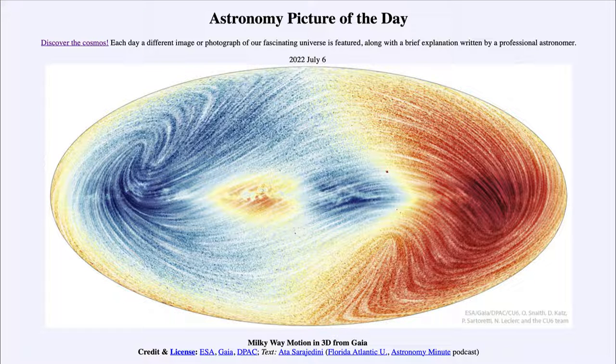from the NASA website, apod.nasa.gov/apod. Today's picture for July 6th of 2022 is titled Milky Way Motion in 3D from Gaia. So what do we see here?